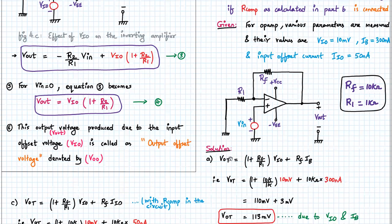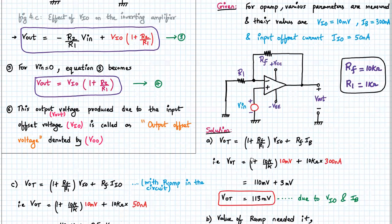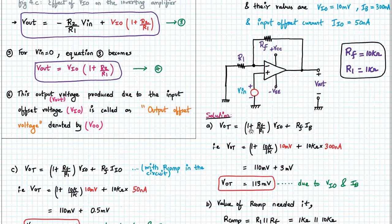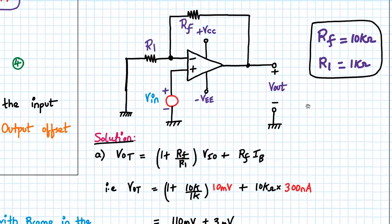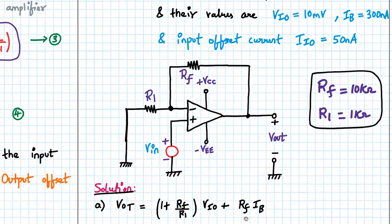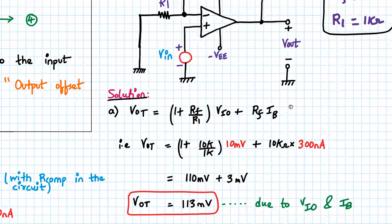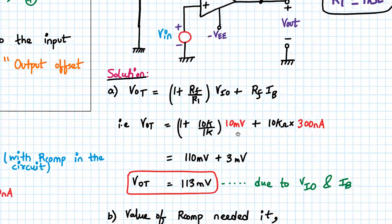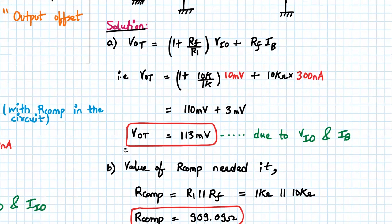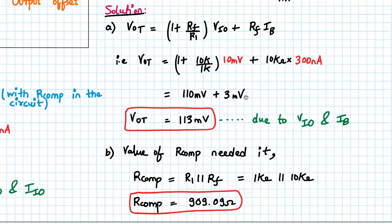So we can start with the solution. So the first case, we don't apply any compensation. So VOT formula will be 1 plus RF upon R1 into VIO plus RF into IB. So VOT will be equal to 1 plus 10K upon 1K, VIO is given as 10 millivolt, and plus RF that is 10K into IB is given as 300 nano amperes. If you plug in these answers, the first term will give you 110 millivolt and the second term will give you 10 millivolt. So your total output offset voltage is 113 millivolt due to VIO and IB.